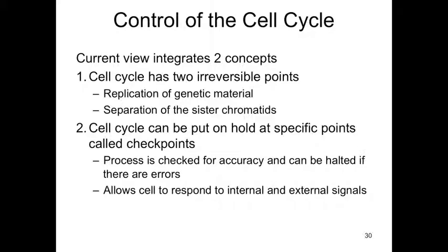The cell cycle has two irreversible points. When we decide to replicate the genetic material in S phase, the cell is sort of committed to division. The other part is where we have separation of the sister chromatids. The other concept in our current view is that the cell cycle can be put on hold at specific points, which we call checkpoints.